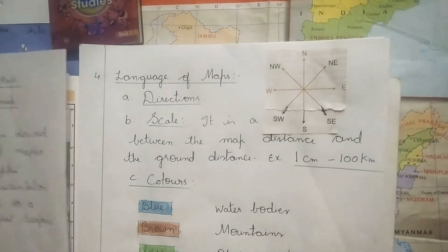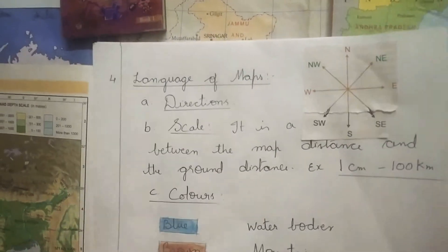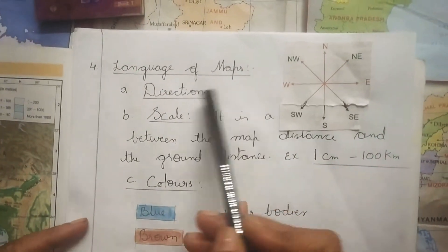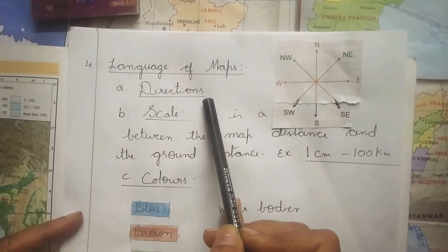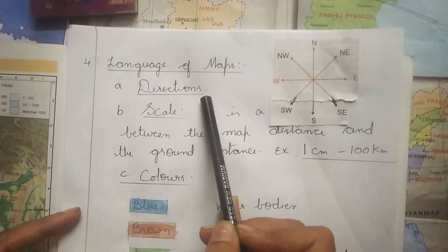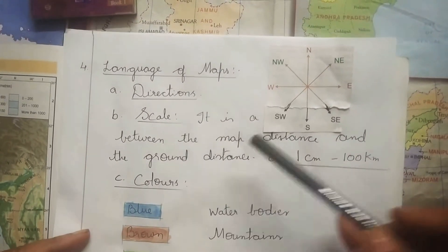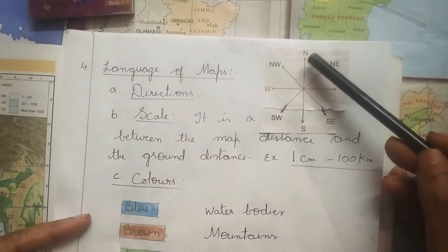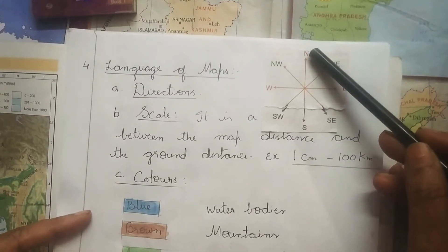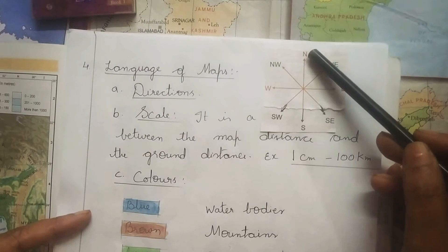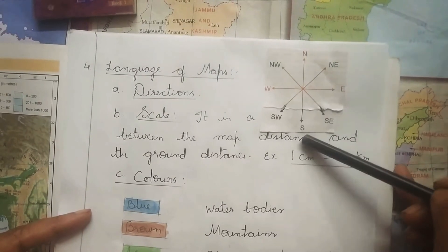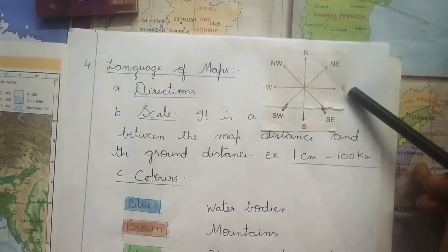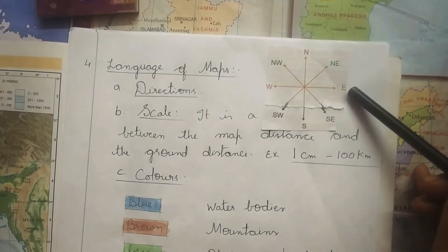Next, how to read a map? There is a language of maps. When we have to read a map, we must know the language. The first language is direction. The top of the map is north, bottom is south, right side is east, and left side is west.